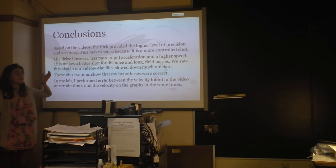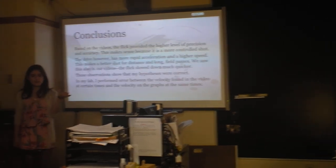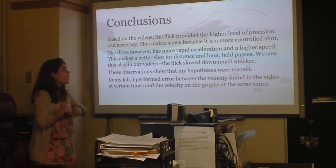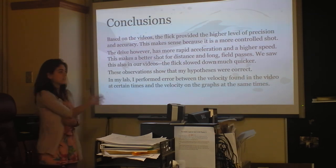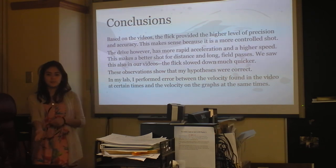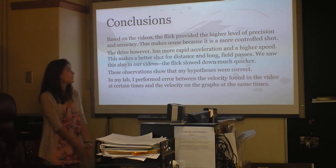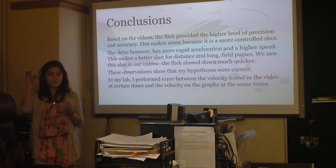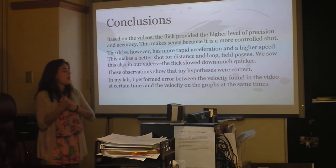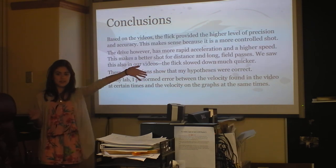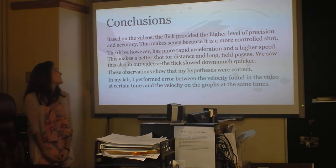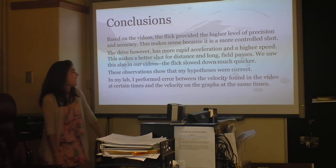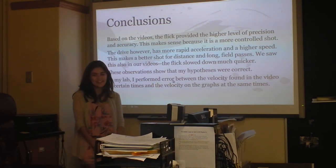And then my conclusions is that, based on our videos, the flick did have a high level precision accuracy. Like, you couldn't hear it, but it did hit the back corner, which is where it's supposed to be going. But like, it slowed down a lot. Like, it hit the ground and lost its speed and rolled into the goal, instead of going as fast as it did the whole time. But it makes sense, because it has a closer, less radius for its axis of rotation, so it's going to be more controlled. And then the drive had more acceleration, like a bigger jerk, more speed. And it like obviously didn't slow down as much as my flick hit, but I didn't go in the goal, so it wasn't as accurate. So it's better for distance and long field passes, which we saw in the videos also. And then, so my hypothesis is correct. And then that's it. Thank you.